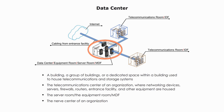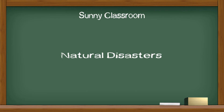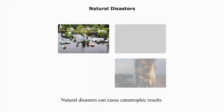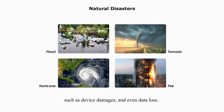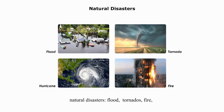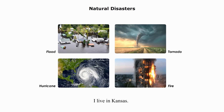One is prevention of natural disasters. Natural disasters can cause catastrophic results to the data center, such as device damages or even data loss. The data center should be protected from natural disasters such as flood, tornadoes, fire, hurricanes, or even earthquake if you live in California or Japan. I live in Kansas — there are a lot of natural disasters.